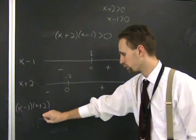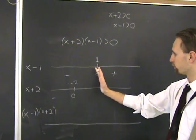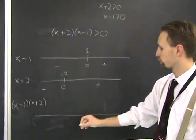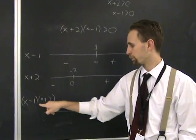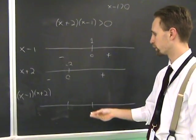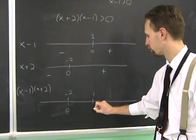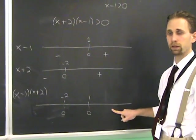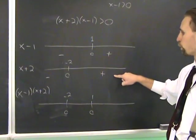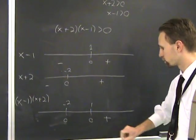Then you draw out a third one for their product. Now look at this. If x is greater than 1, well first of all, you mark off where it's 0. This multiplication will be 0 if x is minus 2, bring out 0, or if x is 1. If x is greater than 1, you look at the sign of the factors. Both factors are positive, hence their product is positive. We get a plus there.